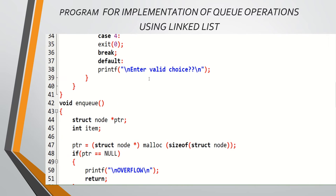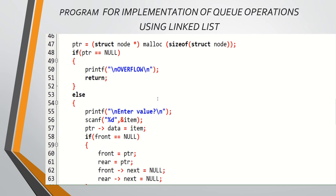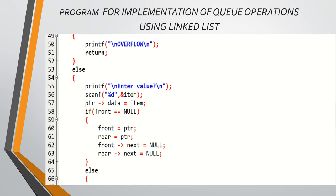Next is the void enqueue insertion operation. A node pointer is created and memory is allocated to that node. If the pointer equals null, it indicates overflow and we cannot insert the node. If it is not null, execution jumps to the else statement and the user is prompted to enter a value. The new node is ptr, and ptr->data is assigned the entered item value.